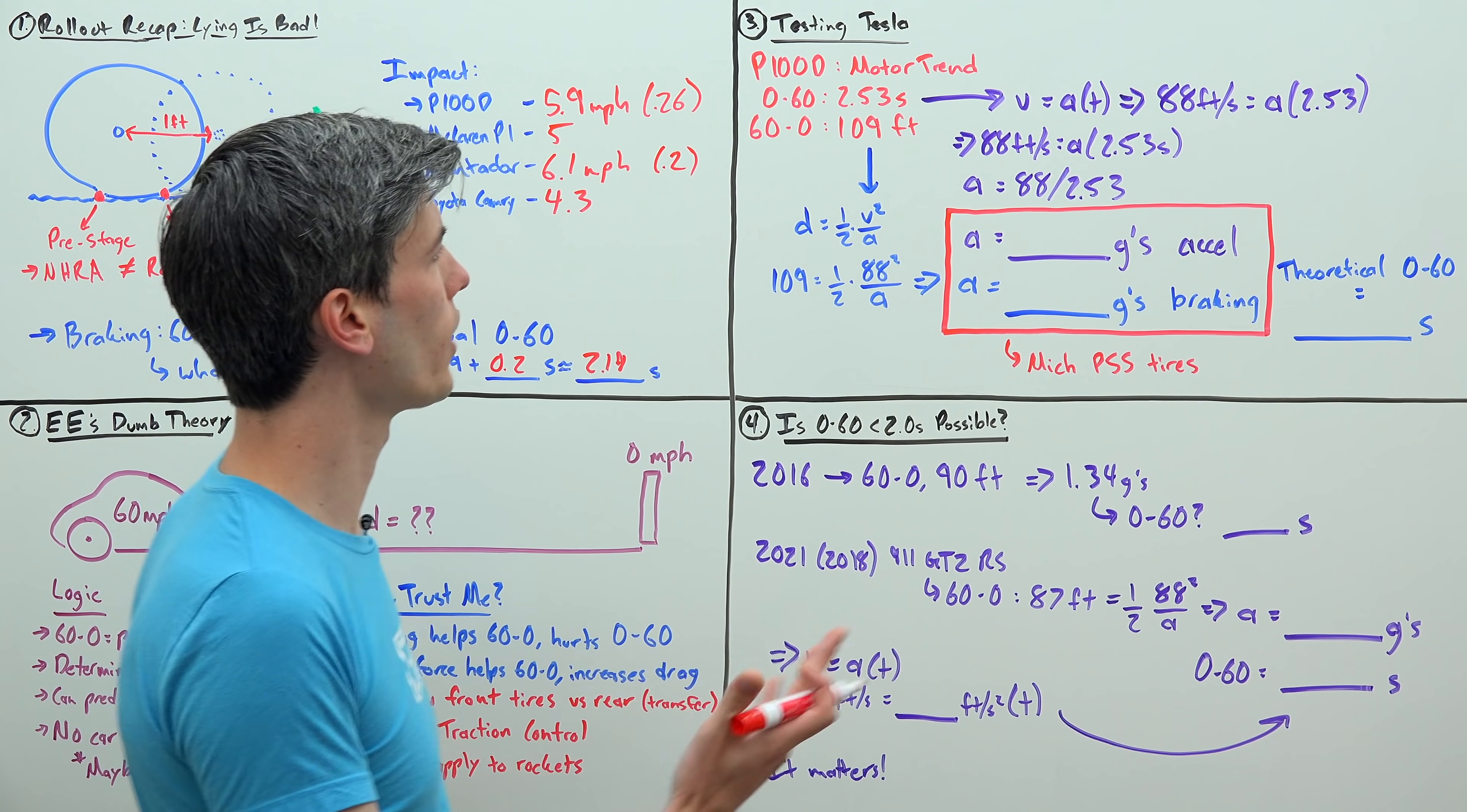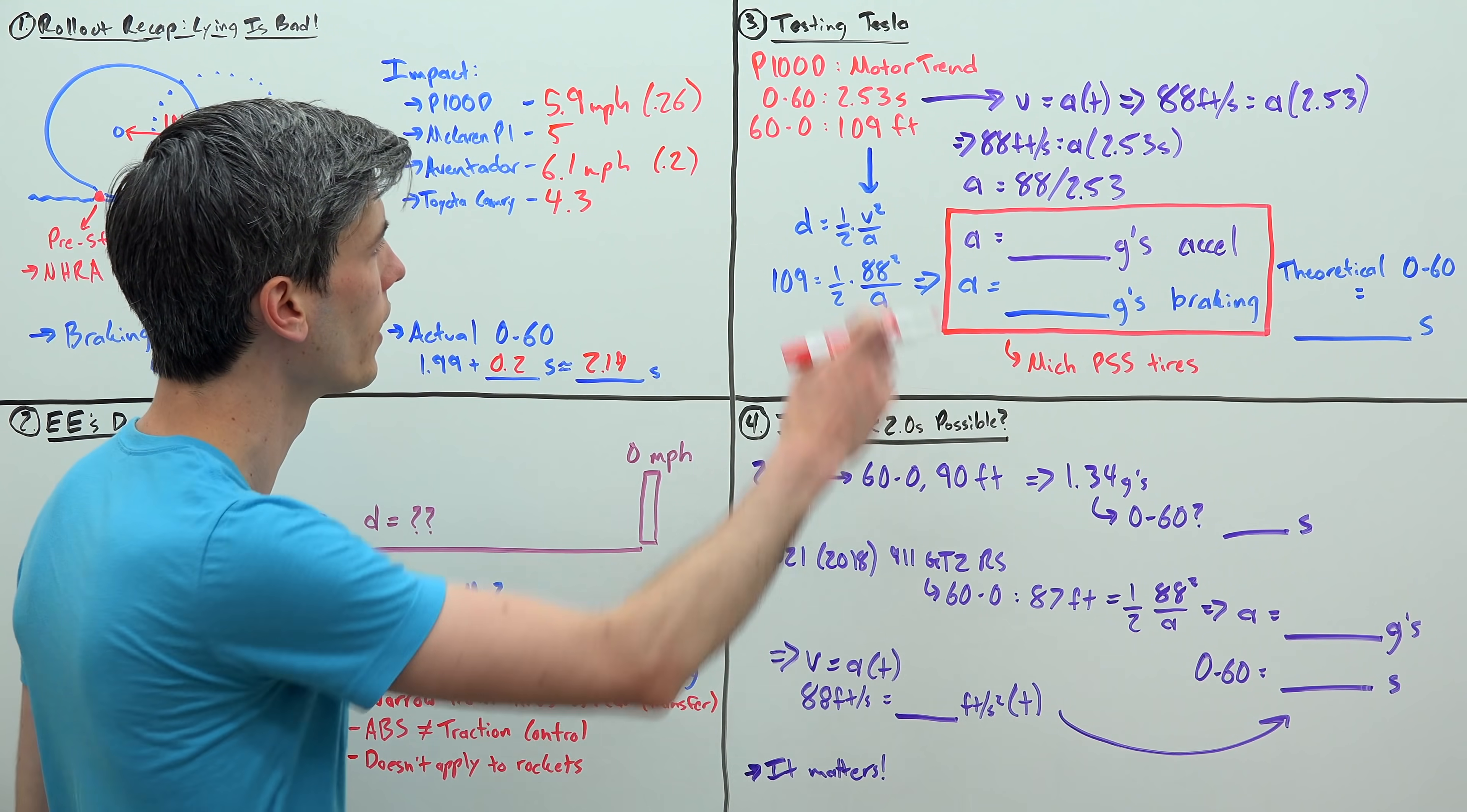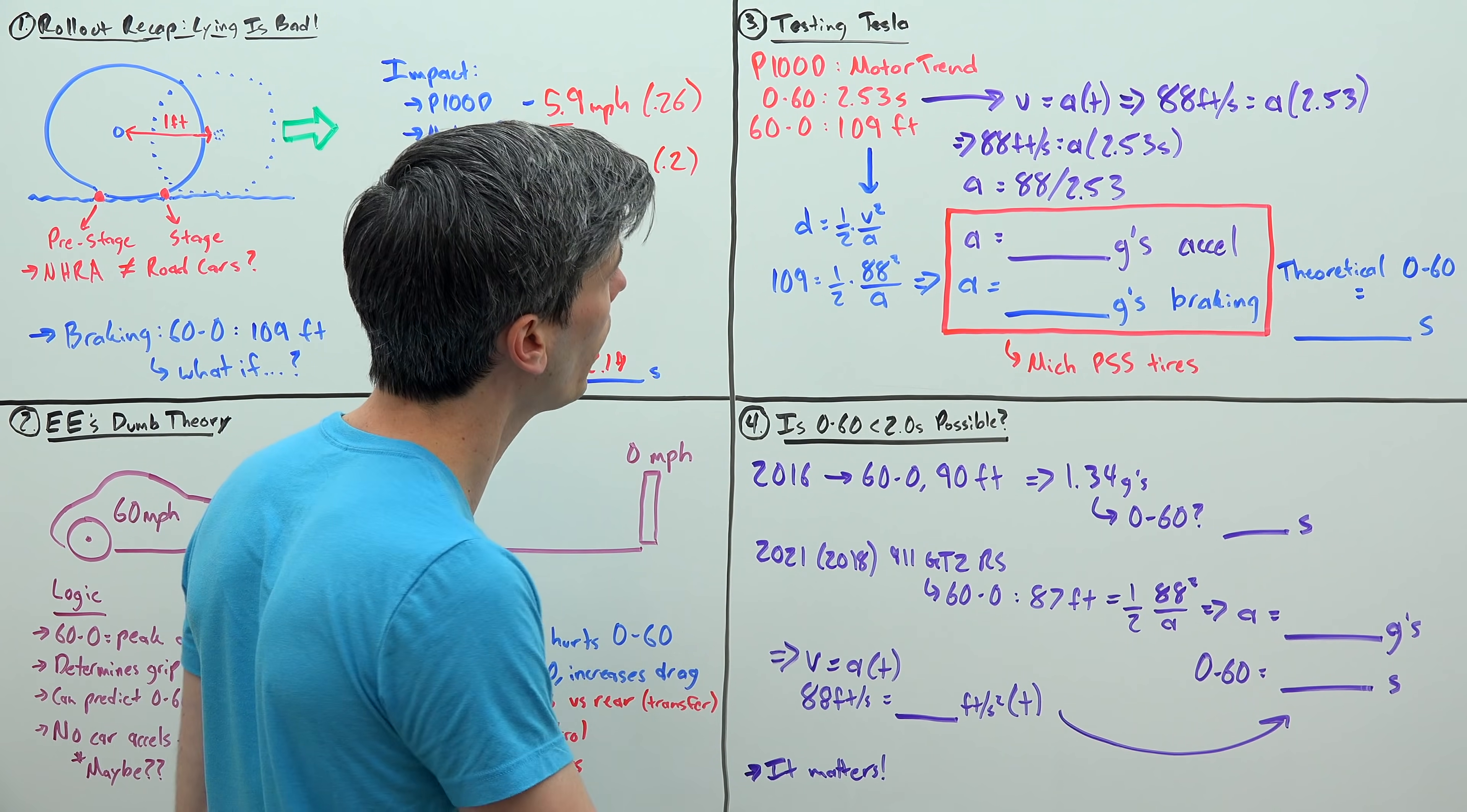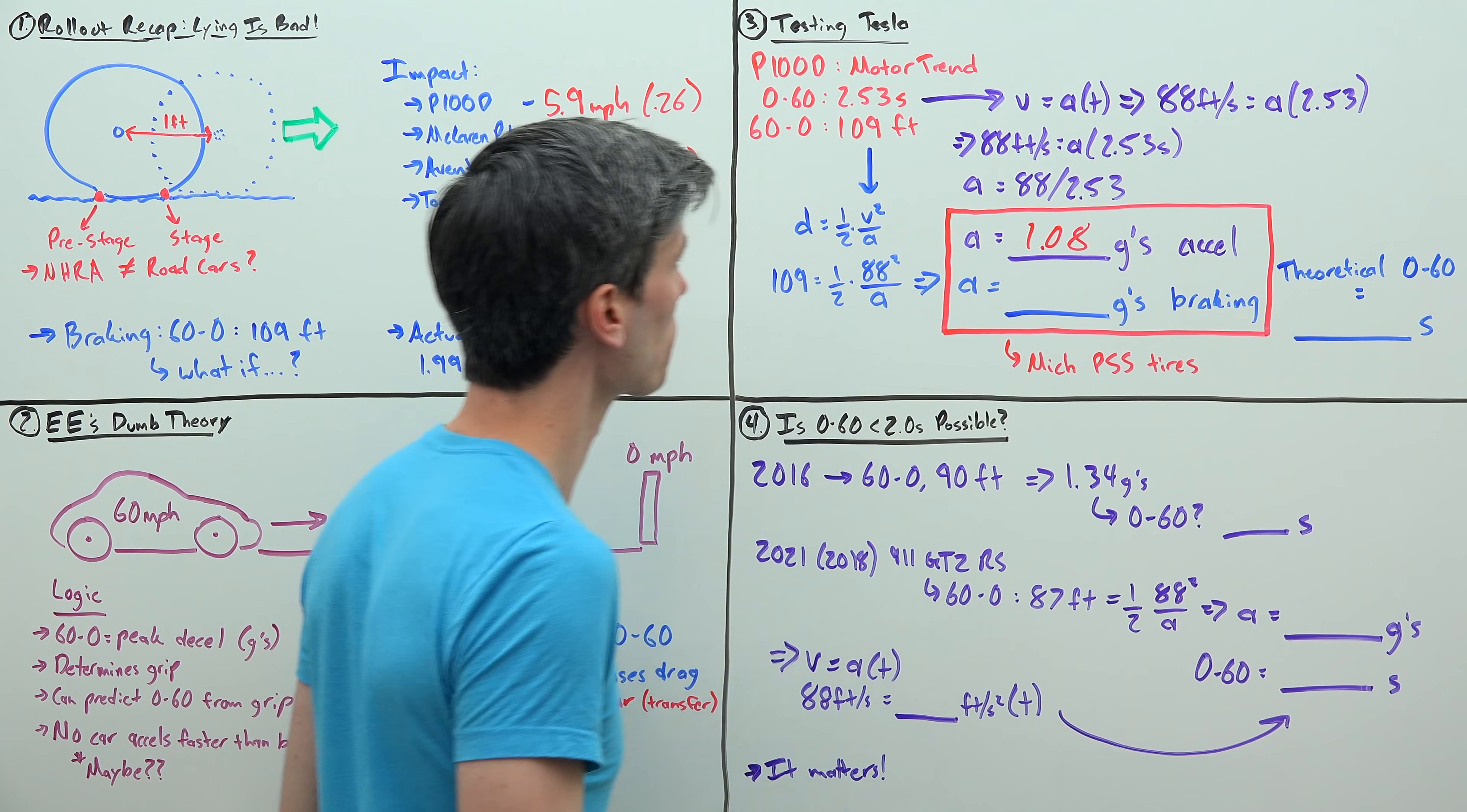All right, so let's look at a quick example using some data from Motor Trend. They tested a Model S P100D. They got a true 0 to 60 of 2.53 seconds and a 60 to 0 braking distance of 109 feet. Using this 2.53 seconds, we can do the math, velocity equals acceleration times time, and find out that vehicle on average is accelerating at 1.08 g's.